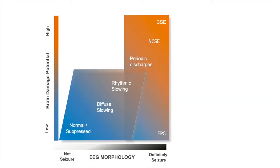I like to emphasize that the algorithm was designed to be more sensitive than specific. As you see in the lower left corner, the potential for brain damage is extremely low if a patient is suppressed — for example, burst suppression — or is having normal or just diffuse slowing. As the patient starts going towards non-convulsive status epilepticus, the metabolic rate goes up and the potential for brain damage goes up. The worst case scenario is convulsive status epilepticus, as shown in the top right corner. There is always a gray zone — it's never a clear-cut distinction between normal and abnormal.